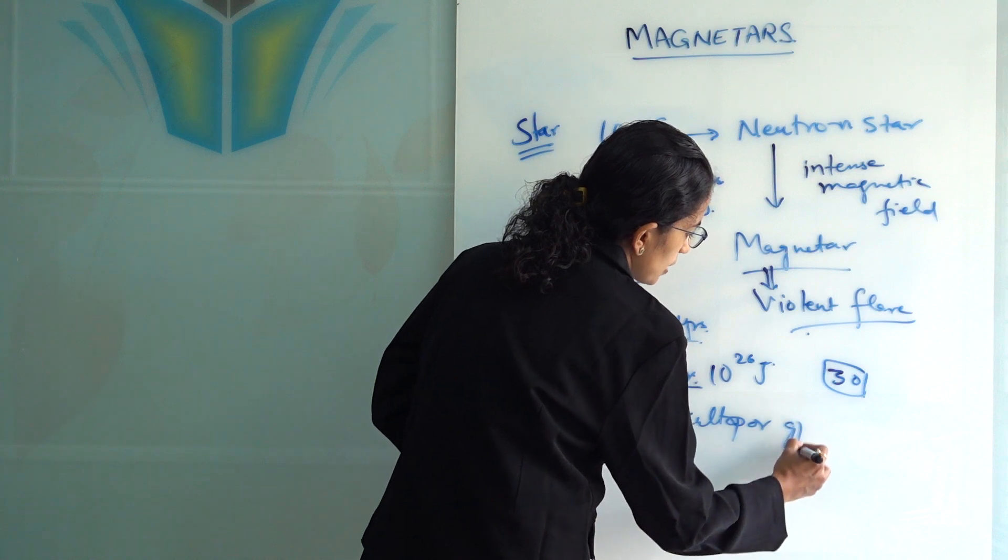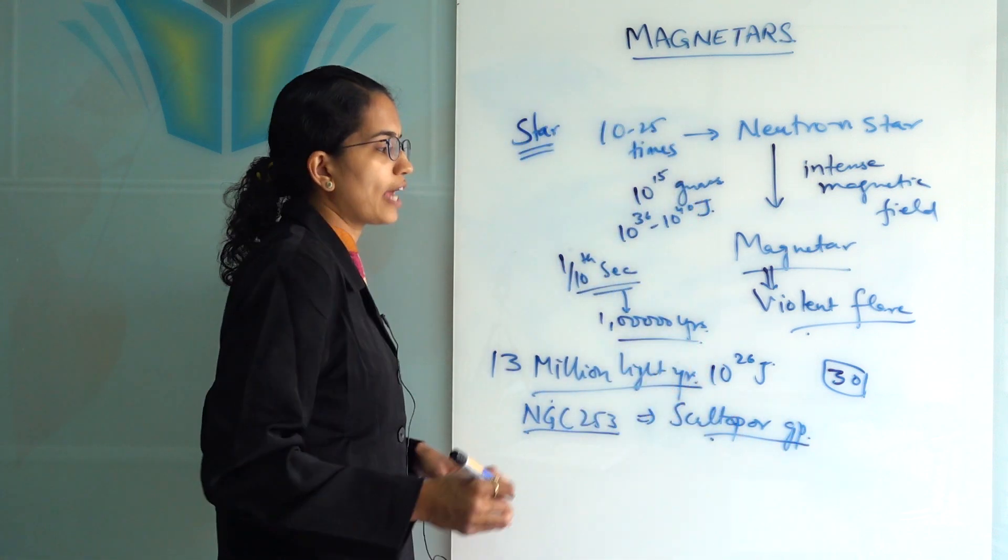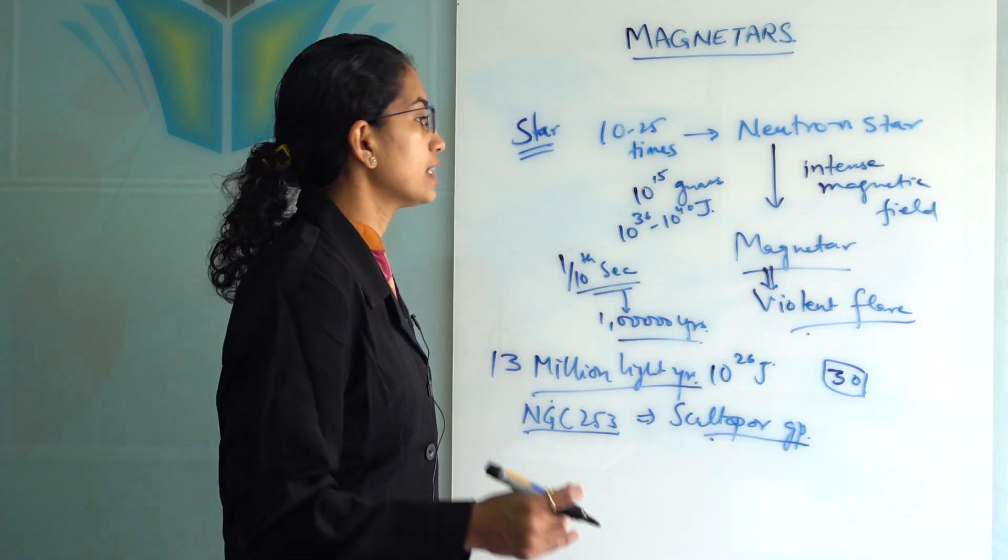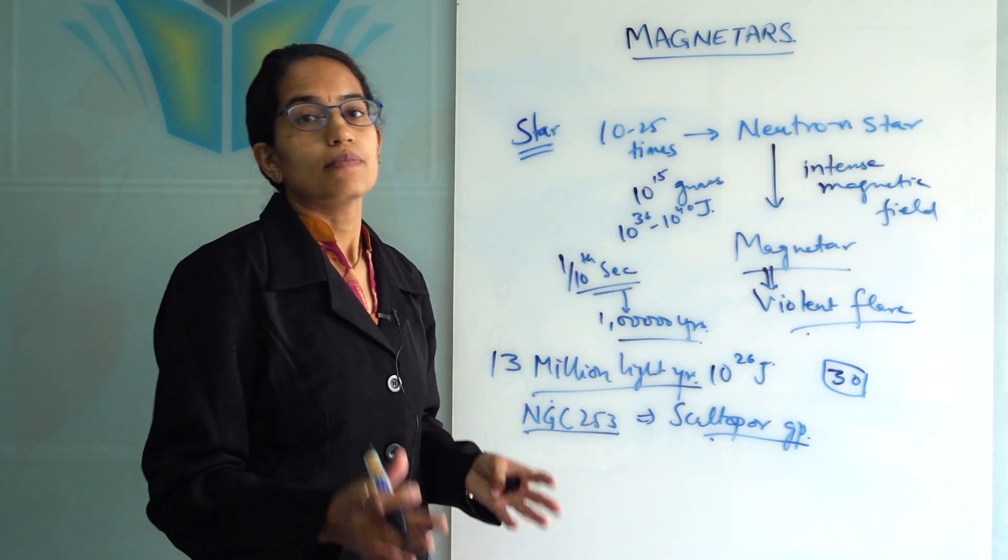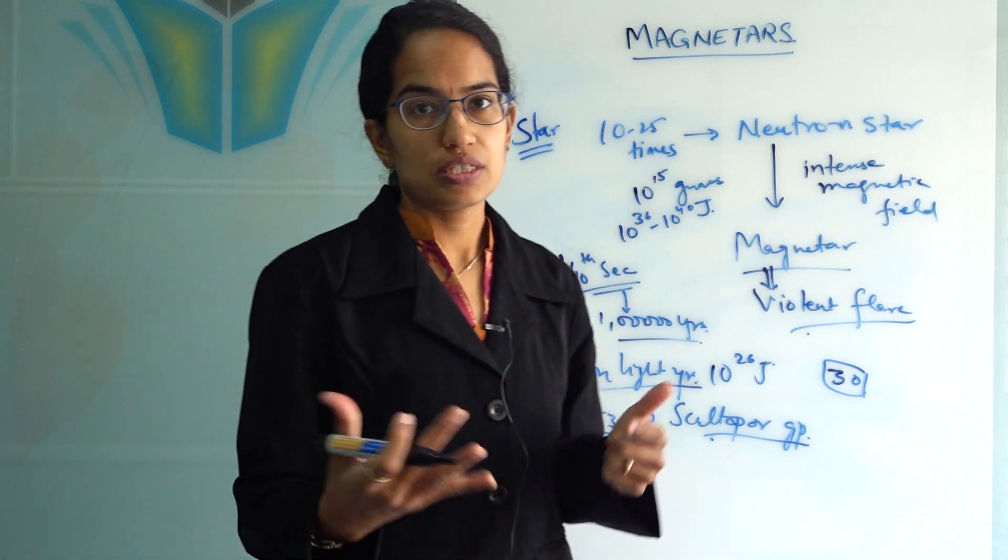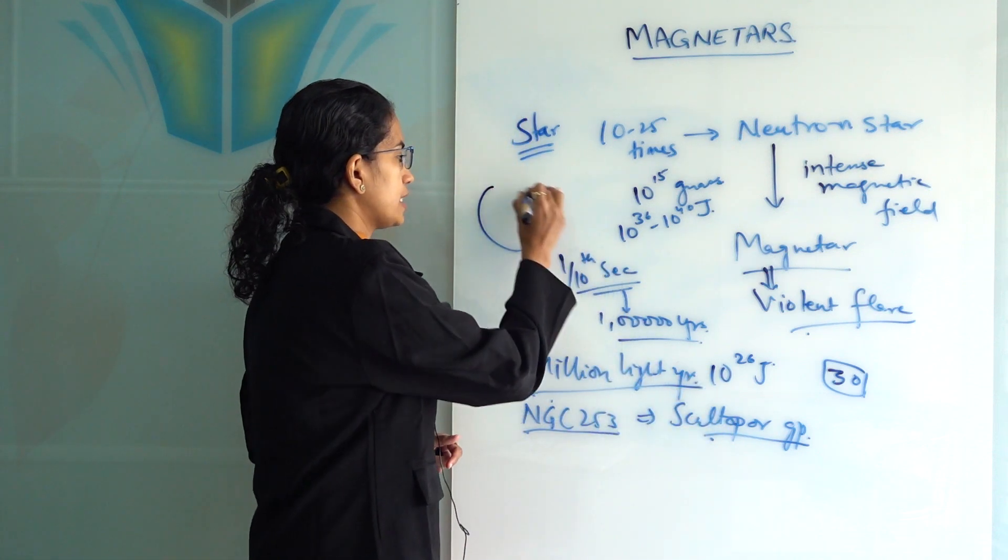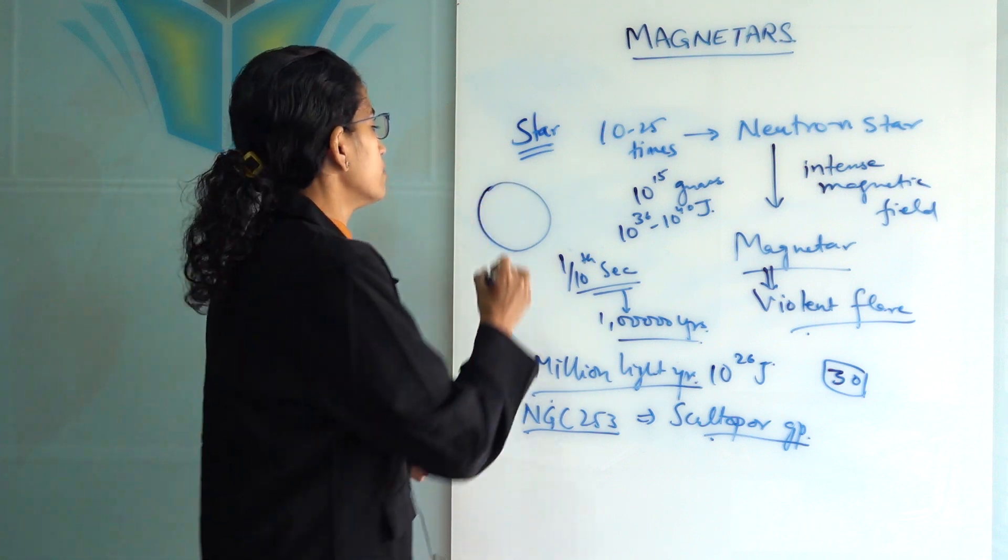In the Sculptor group of galaxies they are found, and so far in the Milky Way only 30 magnetars have been identified. Now how do magnetic eruptions take place? In the outermost layer of these magnetars, which is called the magnetosphere.